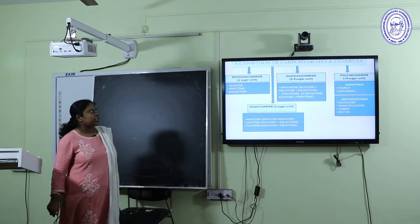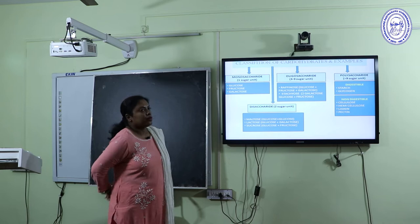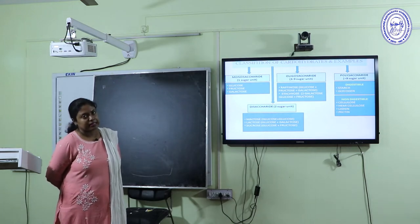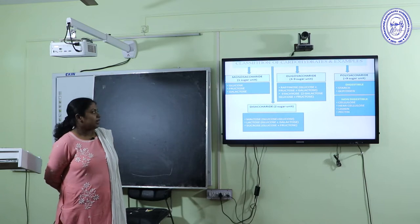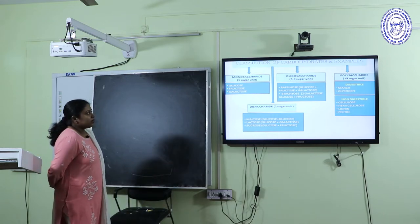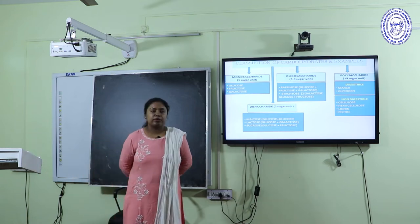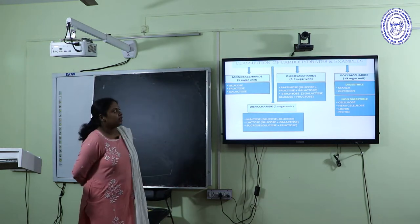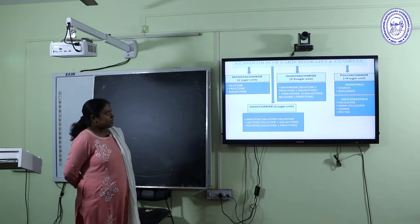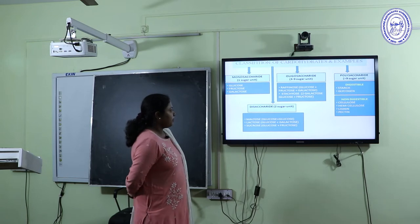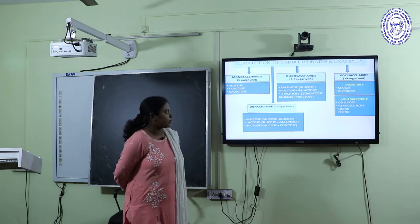Monosaccharides have one sugar unit — like glucose, fructose, and galactose. Disaccharides have two sugar units — examples are maltose, lactose, and sucrose. In maltose, two molecules of glucose are present. In lactose, glucose and galactose. In sucrose, glucose and fructose. In oligosaccharides, three to ten sugar units are present. In polysaccharides, more than ten sugar units are present. Examples of oligosaccharides include raffinose, consisting of one molecule each of glucose, fructose, and galactose, and stachyose consisting of four sugar units: two galactose, one glucose, and one fructose.